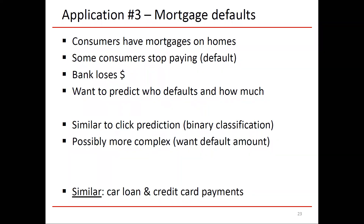From the bank's perspective: in click prediction, they were trying to predict whether you click or not — that's binary. In the mortgage case, it's more complex because they want to know if the damage to the bank will be $10,000 or hundreds of thousands. Similarly, for car loans and credit cards, they collect a lot of data to determine whether you'll make payments. If they think you're reliable, your interest rate will be low. If you're somewhat unreliable, they'll charge a high interest rate. And if you're very unreliable, they won't do business with you.